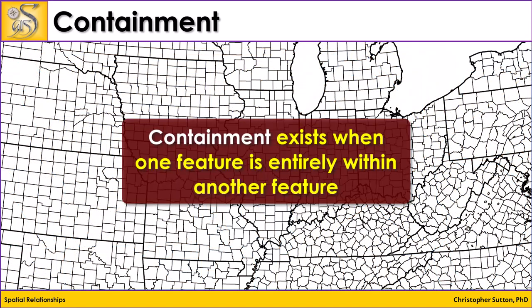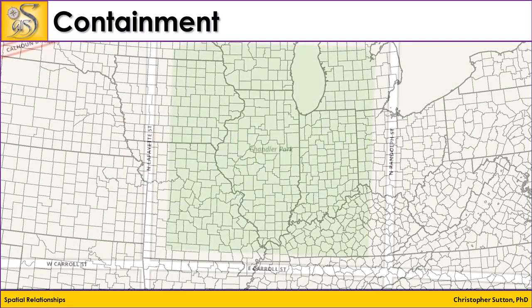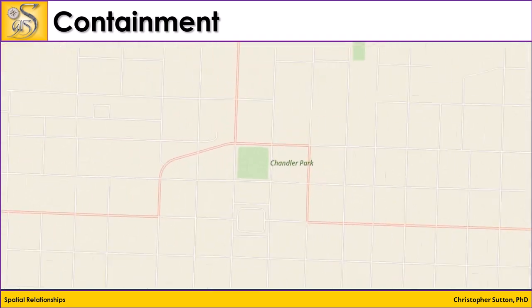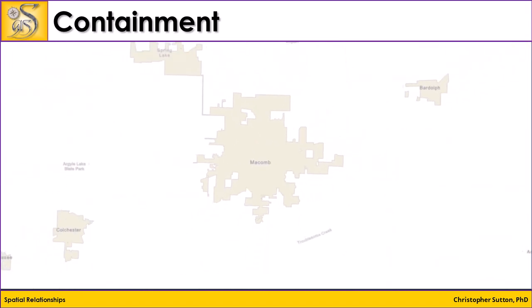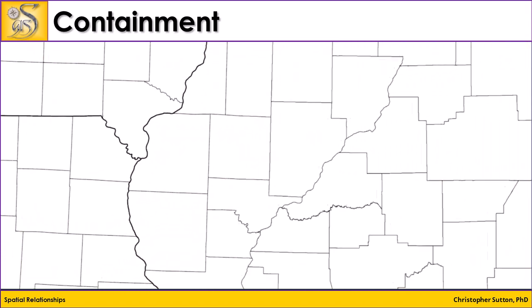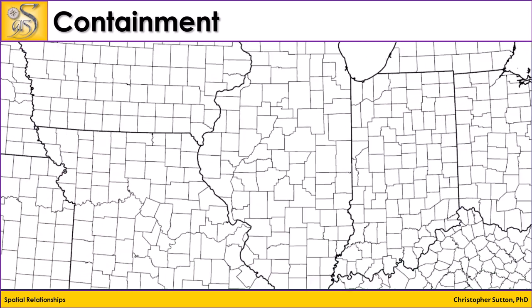Containment is something we saw a visual example of in an earlier video when I talked about places and how places can exist in a nested hierarchy. Containment exists when one feature is entirely within another feature — for example, counties inside of states, states inside of a country. At the local level, parks inside of a city, which could be important for jurisdictional issues about who is responsible for maintaining a particular park.